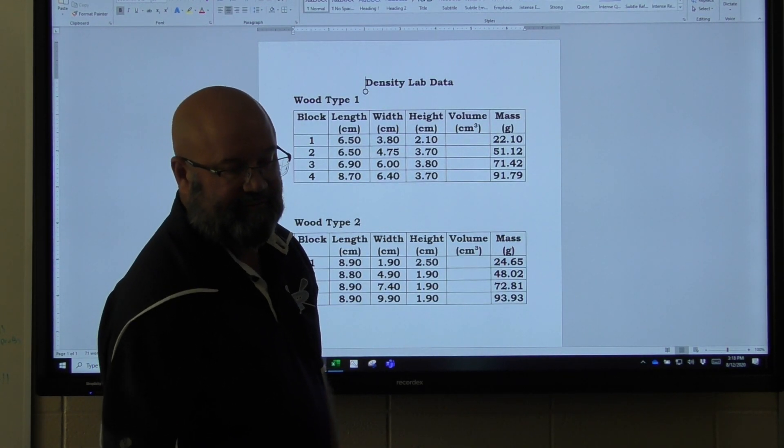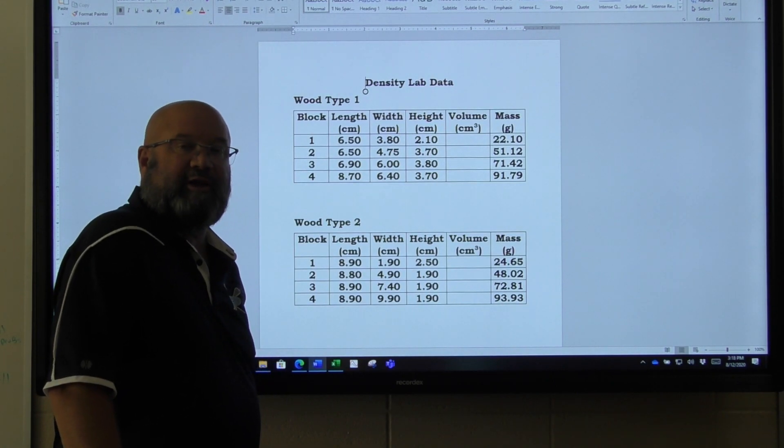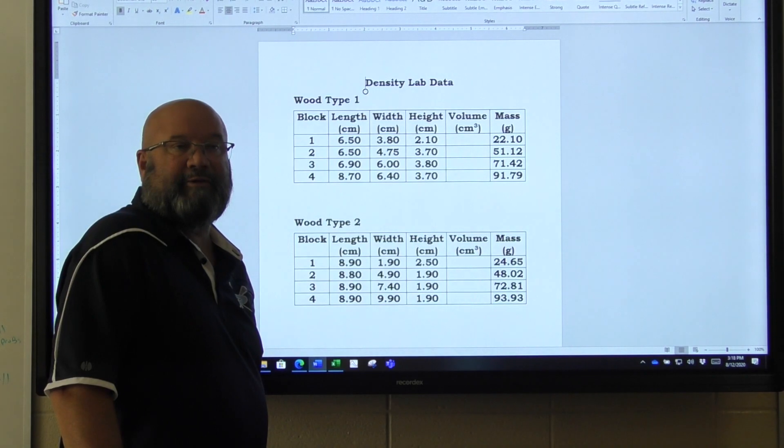So we're dealing with wood here. You should probably all be able to make a prediction about what the density of each one of these different types of wood should be. Should it be more or less than one? You might want to discuss that in your lab write-up when we get to that point, like a hypothesis or prediction.